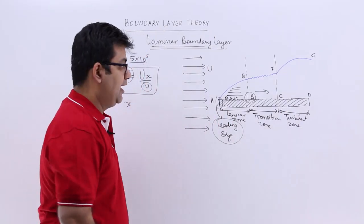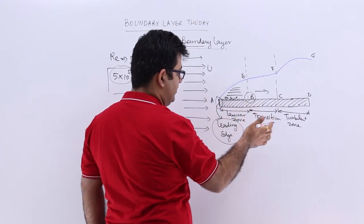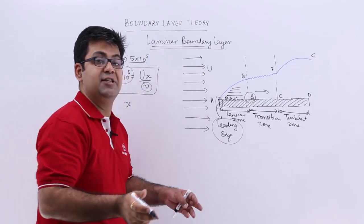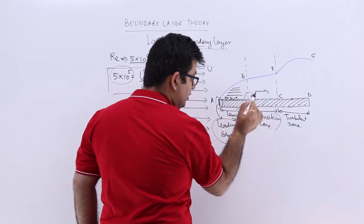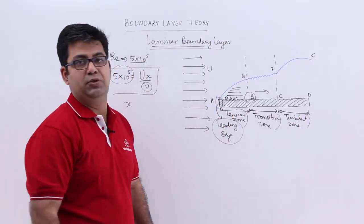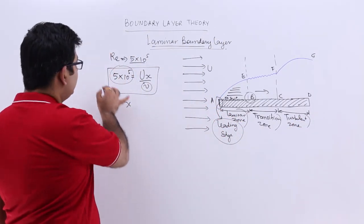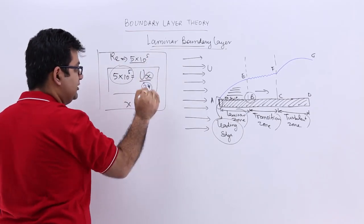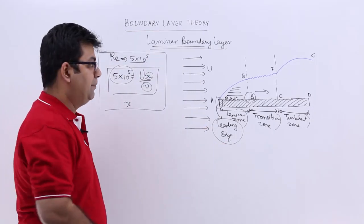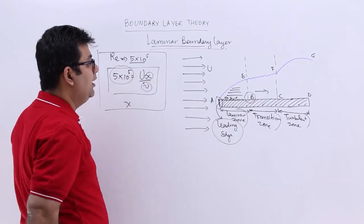The flow starts getting transformed from laminar into the transition zone and then into the turbulent zone. This is the formula with the help of which we can find out the distance from the leading edge up till which the flow would be laminar.